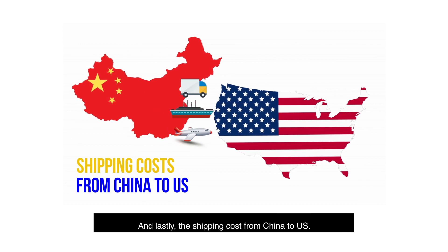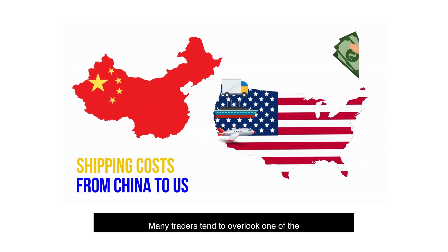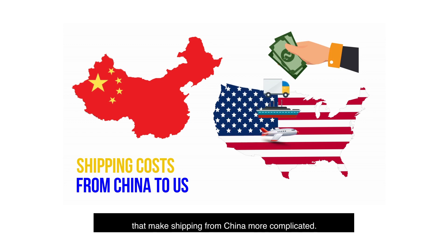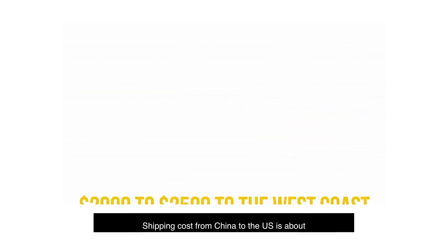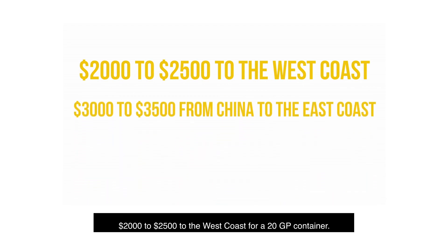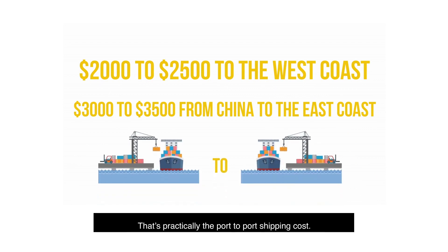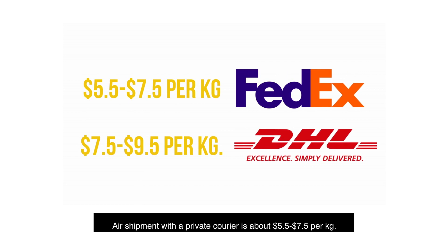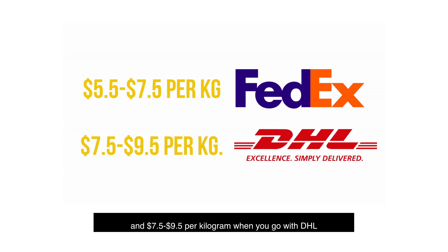And lastly, the shipping cost from China to the U.S. Many traders tend to overlook one of the most common factors in shipping — the cost. Importers should understand that there are a lot of factors that make shipping from China more complicated. Shipping cost from China to the U.S. is about $2,000 to $2,500 to the West Coast for a 20-GP container. It costs $3,000 to $3,500 from China to the East Coast — that's practically the port-to-port shipping cost. Air shipment with a private courier is about $5.50 to $7.50 per kilogram with FedEx, and $7.50 to $9.50 per kilogram when you go with DHL, which is faster and more reliable.